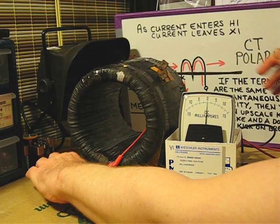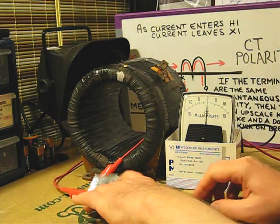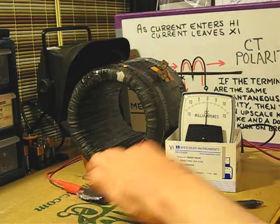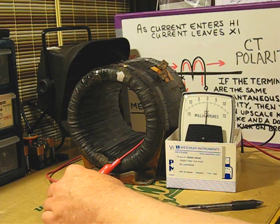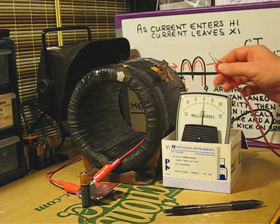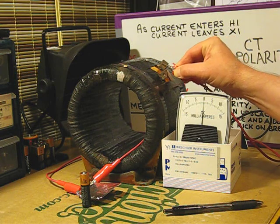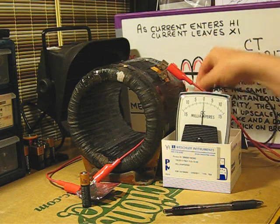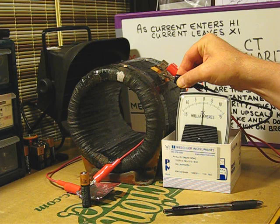Let's connect the DC source that we can use for our primary, and we'll also connect our meter. We'll connect the plus side of the meter to X1 and the negative terminal of the meter to X2.